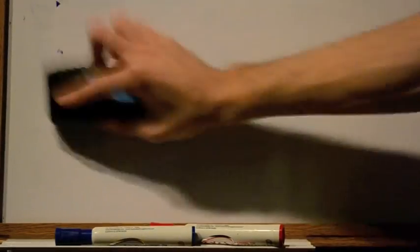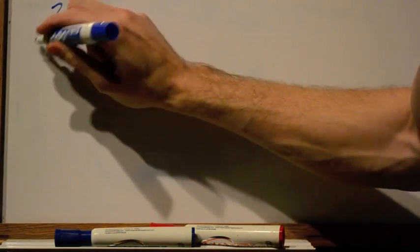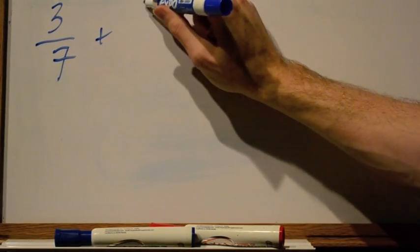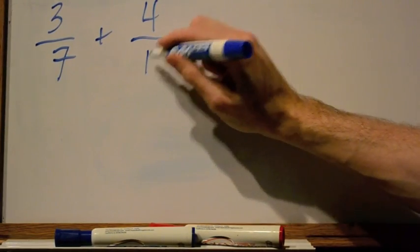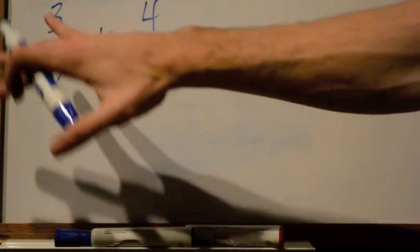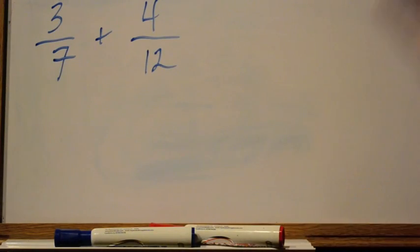Now, that was an easy problem. You might be saying, well, it seems like it took the same amount of time. Well, what if I have something like 3/7 plus 4/12? Go ahead and find the lowest common denominator for that in your head if you want to. It comes out to be 84. But the point is you're going to do a lot of thinking or take a lot of time.